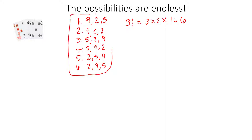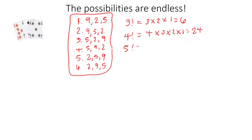Now what if we add just one more card to that list? If we have four cards, four factorial is four times three times two times one, and that's a total of twenty-four. If we add just one more card, five factorial equals five times four times three times two times one, and that is equal to one hundred and twenty. As you can see, this number increases pretty exponentially and pretty rapidly.